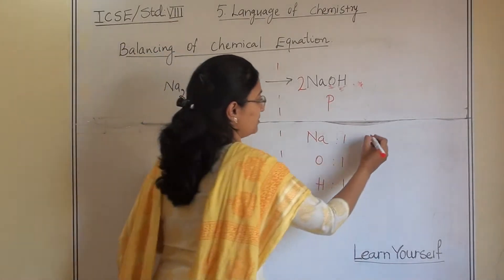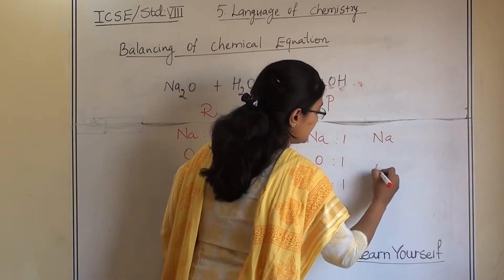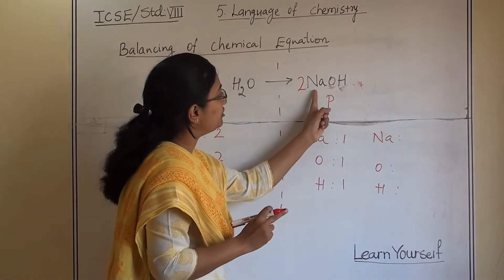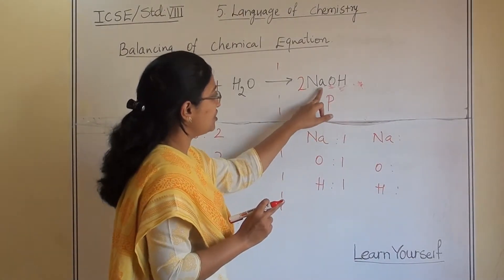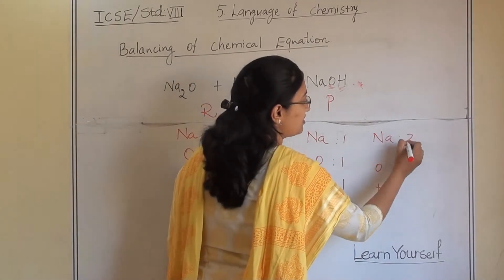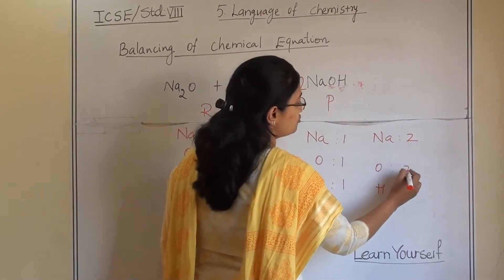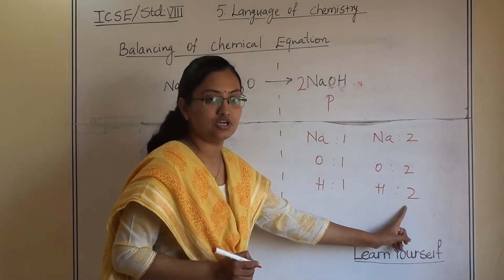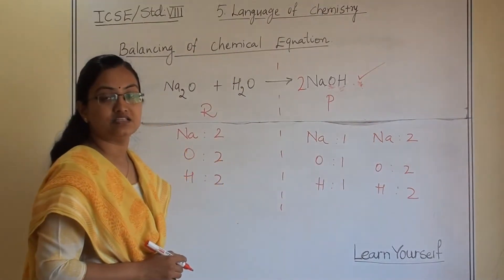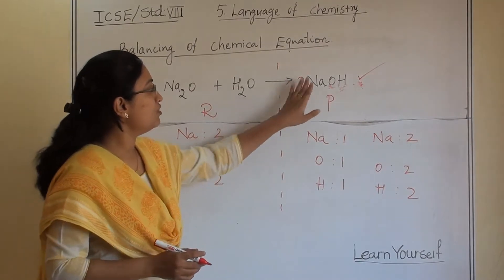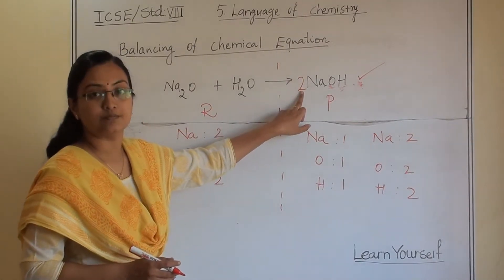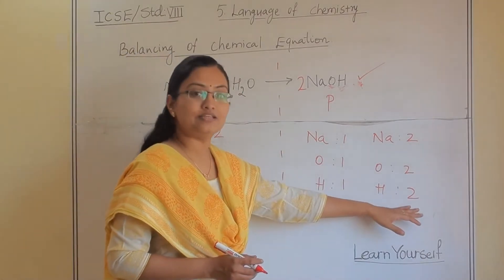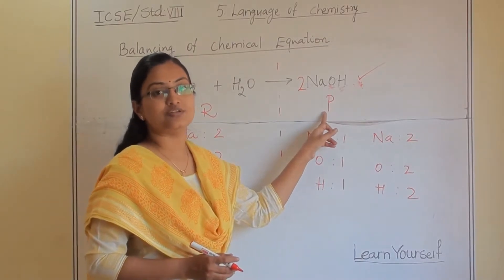So if we add a coefficient of 2 in front of NaOH on the product side, let us check. The coefficient 2 applies to all atoms in NaOH: sodium, oxygen, and hydrogen. So now the product side has two sodium, two oxygen, and two hydrogen — which matches the reactant side. The equation Na₂O + H₂O → 2NaOH is now balanced, because the number of atoms on both sides is equal.